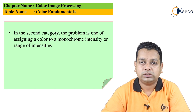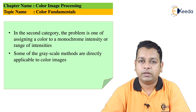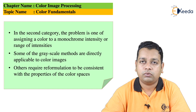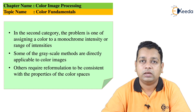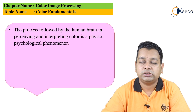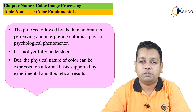The pseudo color problem involves assignment of color to a particular monochrome intensity or range of intensities. Some grayscale methods from earlier chapters are directly applicable to color images, while other methods for color image processing require reformulation to be consistent with the properties of the color spaces we will see in various color models. The process followed by the human brain in perceiving and interpreting color is a physio-psychological phenomenon not yet fully understood, but the physical nature of color can be expressed on a formal basis supported by experimental and theoretical results.